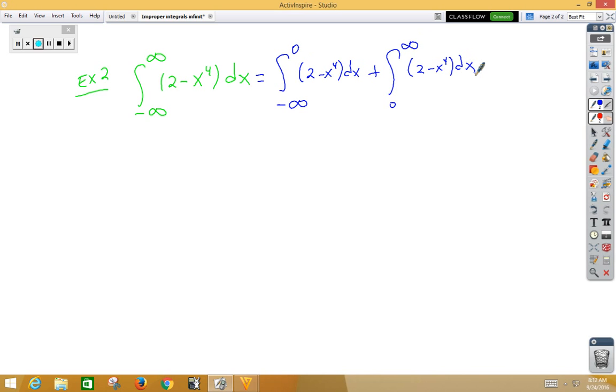Again, if either one of these diverges, the entire problem diverges. Let's start with the left side. We've got the limit as l approaches negative infinity. We're integrating from l to 0 of 2 minus x to the 4th dx.